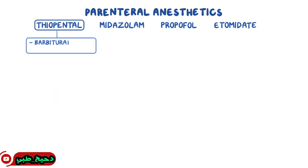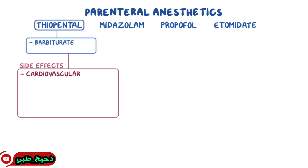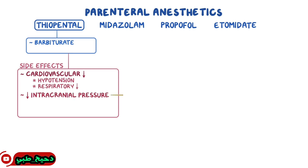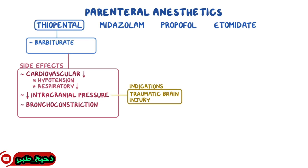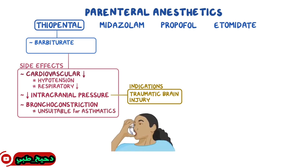Thiopental is a barbiturate and it causes cardiovascular depression, which can lead to hypotension and respiratory depression. It also decreases intracranial pressure, so it can be used in people with traumatic brain injury. Thiopental causes mast cells in the airways to release histamine, which causes bronchoconstriction, making it unsuitable for asthmatics. It diffuses quickly into other tissues, so the duration is very short.